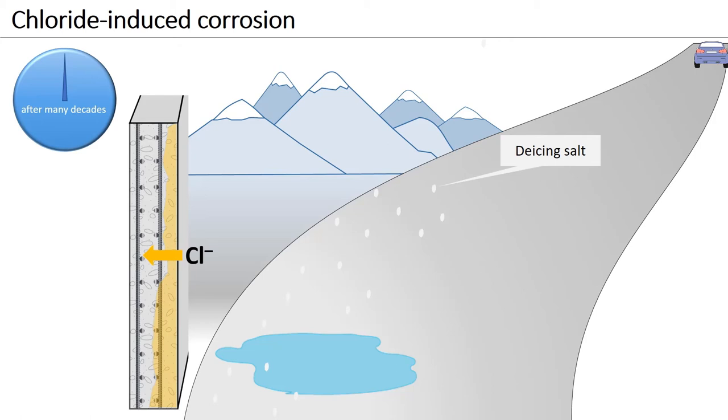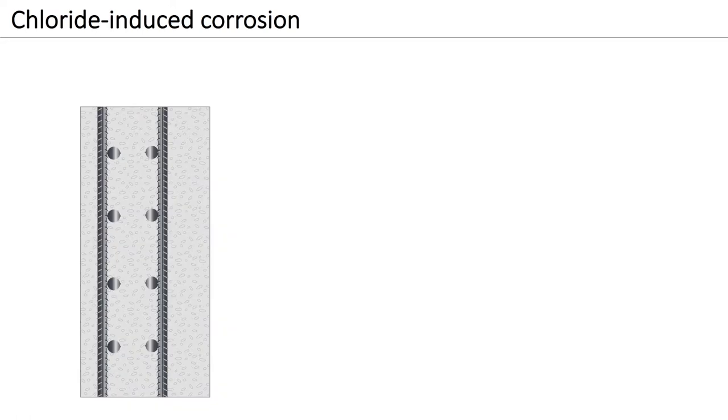The larger the concrete cover thickness, the longer the chloride ingress will take. If the chlorides reach the reinforcing steel in sufficient quantity, the passive film breaks down locally. Corrosion initiates at the breakdown location, which depends on local, often microscopically small weaknesses at the steel-concrete interface. The localized nature of chloride induced corrosion is an important difference to carbonation induced corrosion.